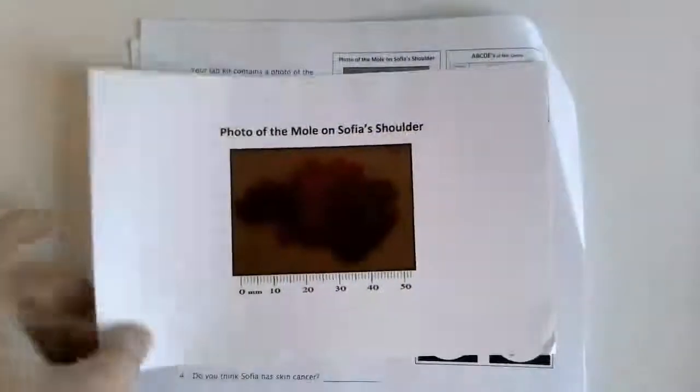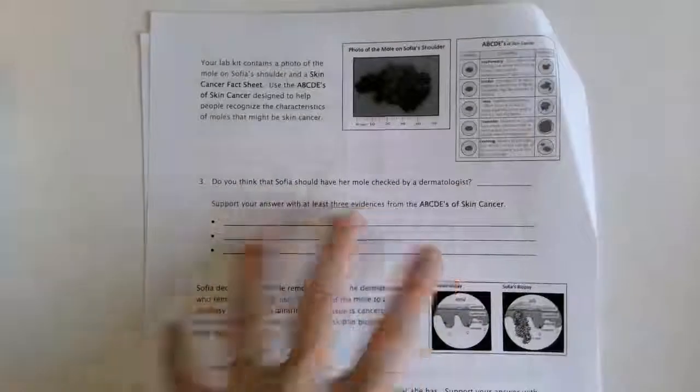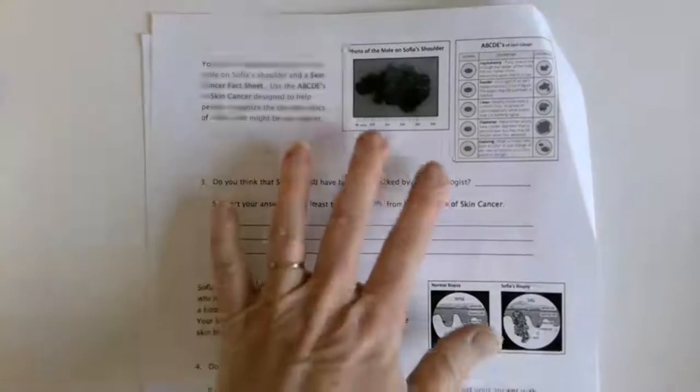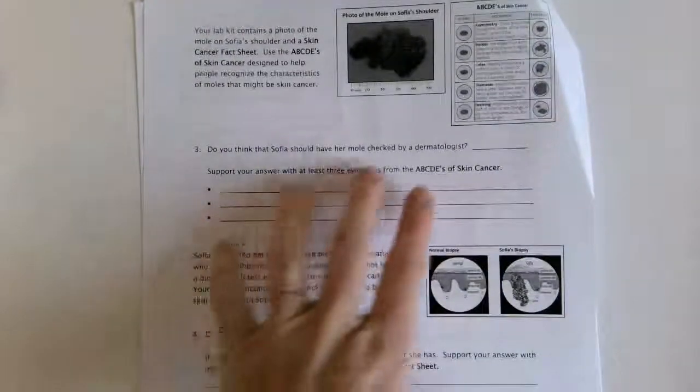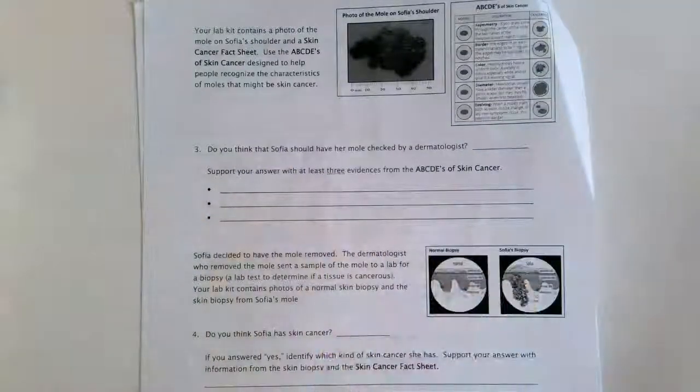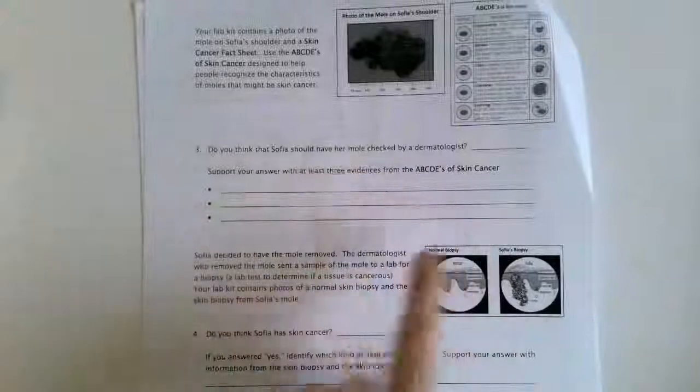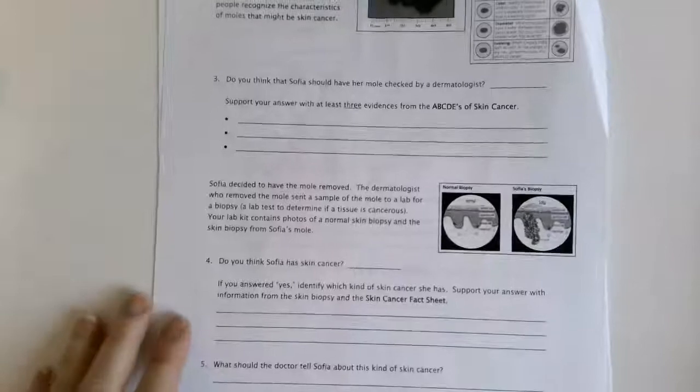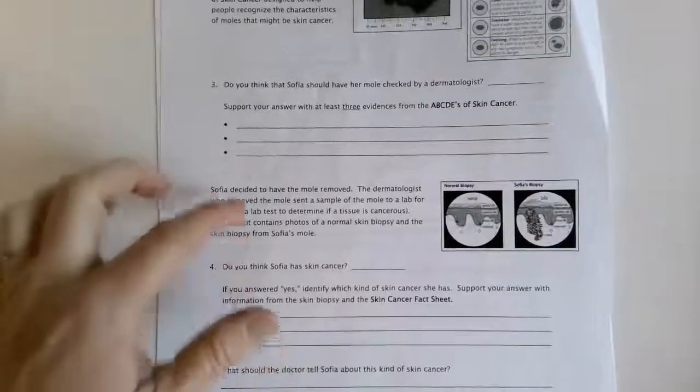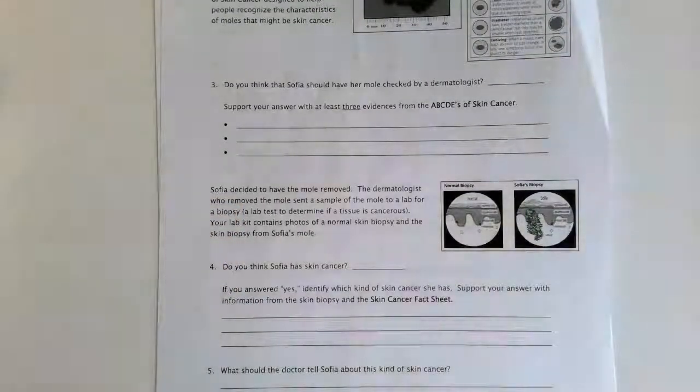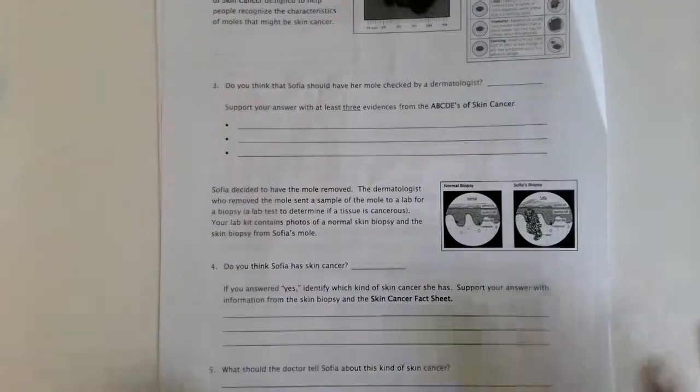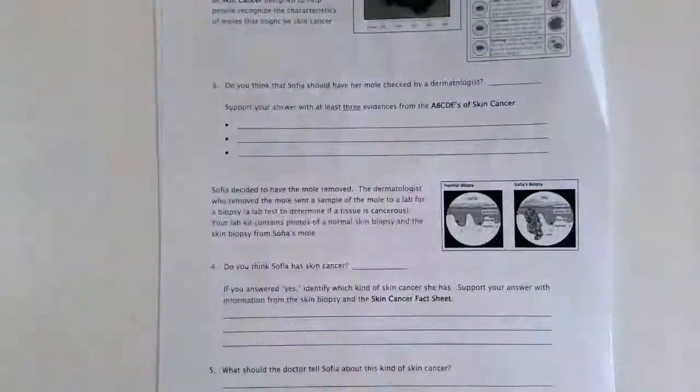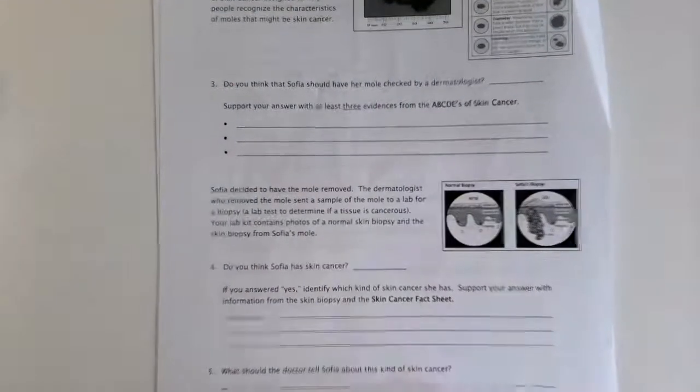You're going to look at Sophia's mole - there's a picture of it - and using the ABCDE's, you're going to write if she should be seen by a dermatologist and why. Then Sophia does decide to have it removed, and you're going to look at her biopsy that came in, which is included there in color. You're going to answer a few questions at the bottom of this page.